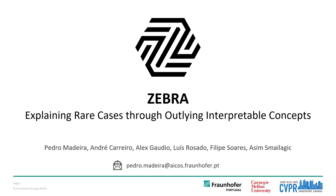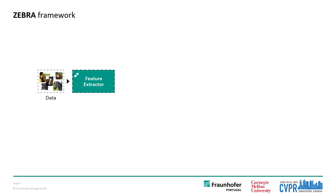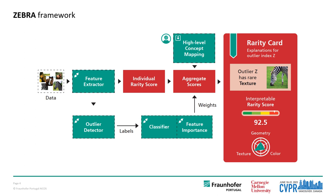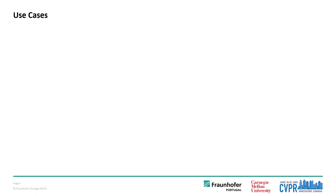ZEBRA aims to explain outliers by analyzing and presenting their outlying and interpretable properties. The modular ZEBRA framework is composed of a feature extractor that breaks down the input data into low-level features, which are fed into the rarity score algorithm. This score characterizes each sample based on its features' likelihood of occurrence. By aggregating concept-related individual feature scores, ZEBRA provides human-understandable explanations for anomalies, presented through multi-modal rarity cards.